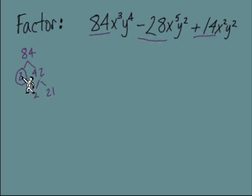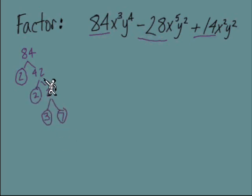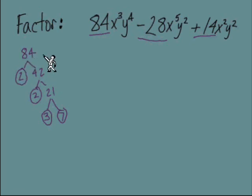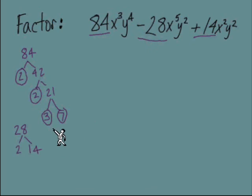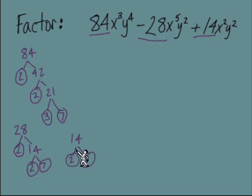I'll take 84 and break it into prime factors: 2 and 42, then 2 and 21, then 3 and 7. So the prime factors of 84 are 2, 2, 3, and 7. It doesn't matter how you break it down initially — just make sure everything is broken down to primes. For 28: prime factors are 2, 2, and 7. For 14: prime factors are 2 and 7.